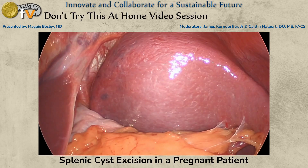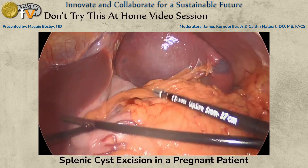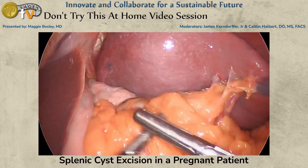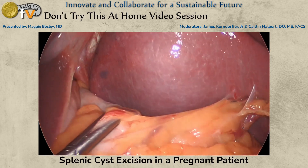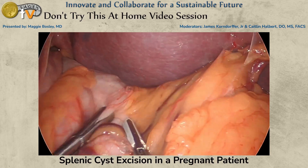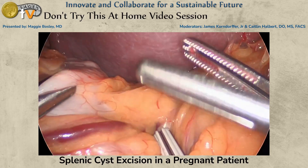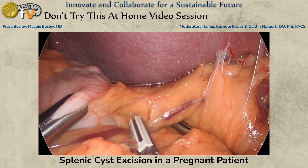After this, we began a medial dissection, taking down some of the short gastrics and working our way up to the superior pole of the spleen.